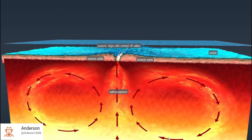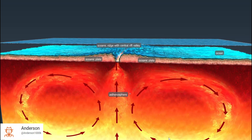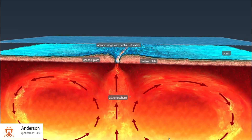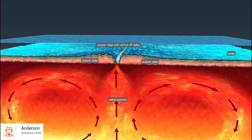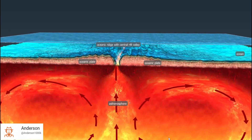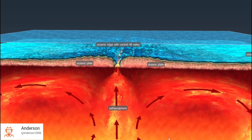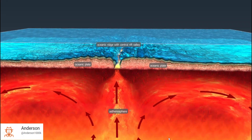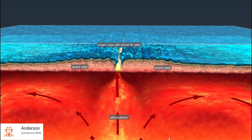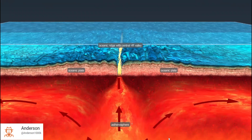Mid-ocean ridges represent an example of divergent plate boundaries. As magma, that is molten rock, rises from the asthenosphere and penetrates the oceanic lithosphere, it reaches the surface, where it cools down and solidifies, forming new lithosphere at the edge of the crack. That is how mid-ocean ridges are formed. As it expands, the mass of molten rock pulls the seafloor apart, causing the tectonic plates on either side of the ridge to move away from each other. Thus, the ocean basin grows wider, a process called seafloor spreading.